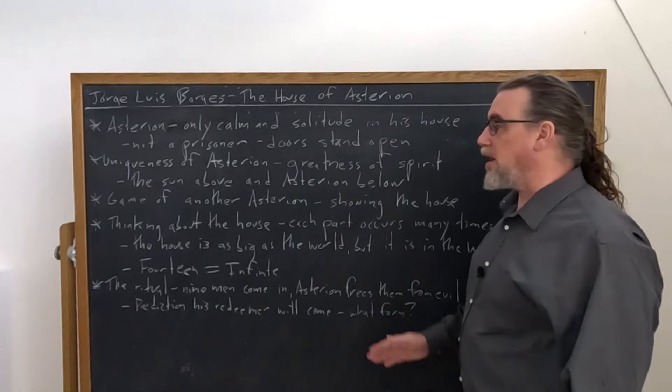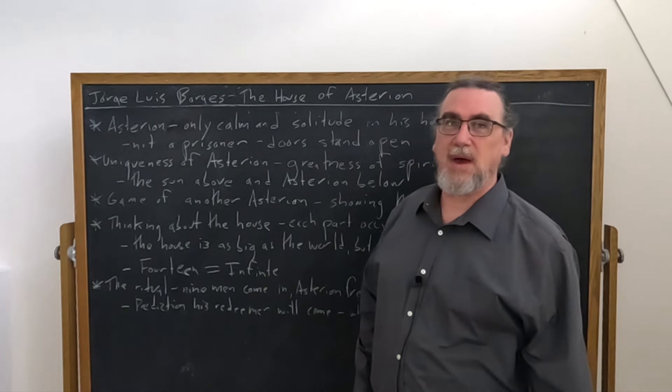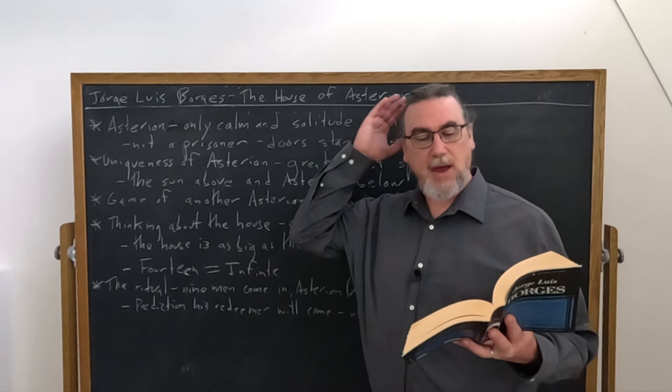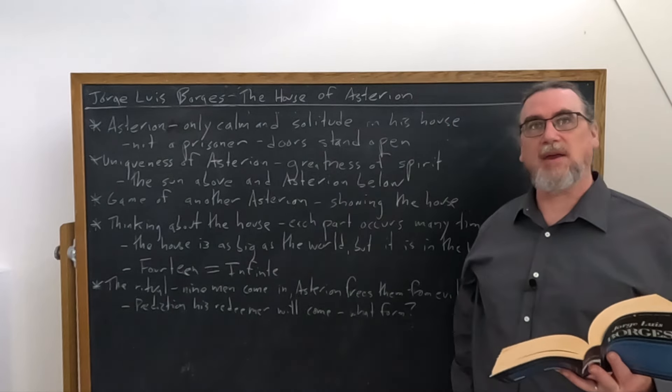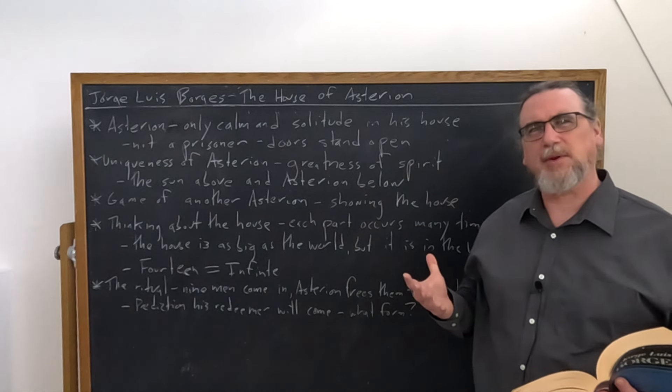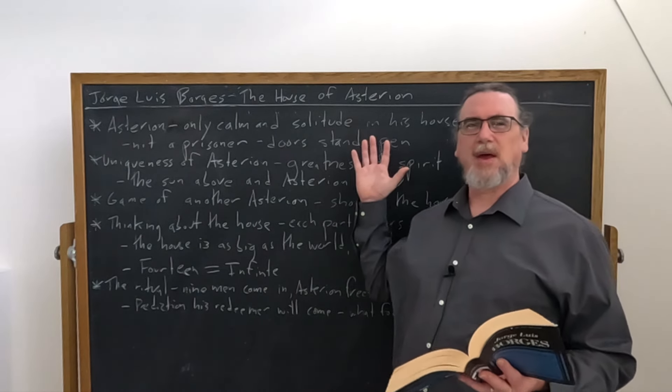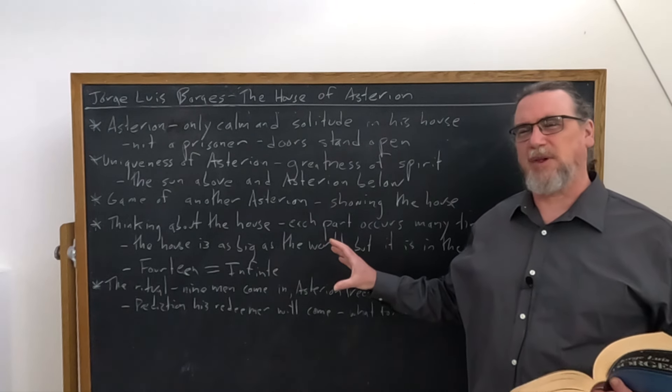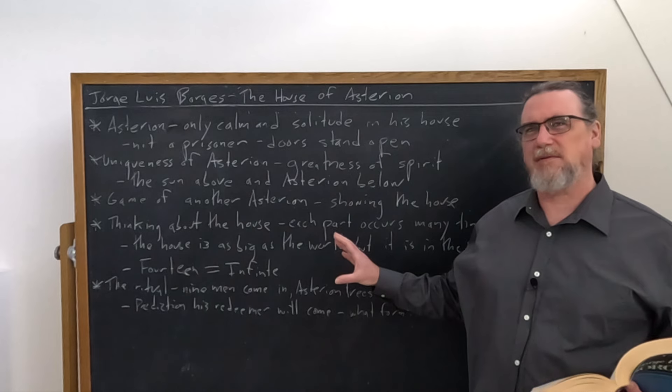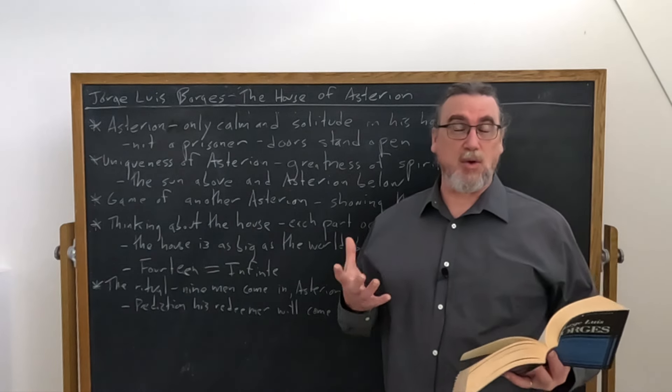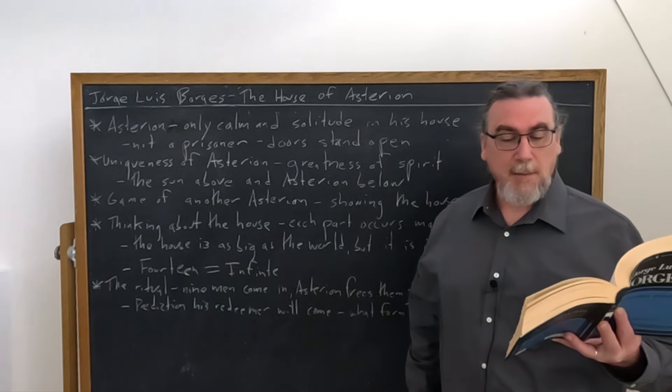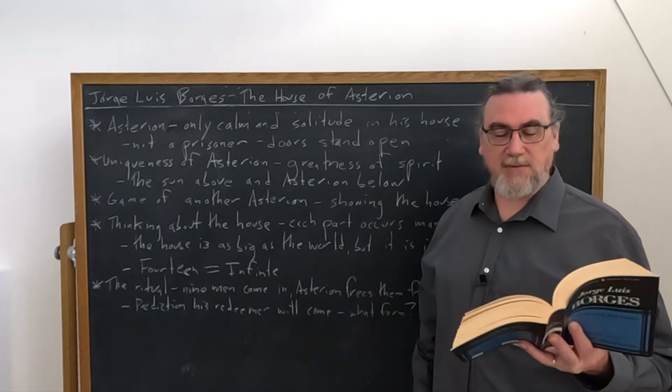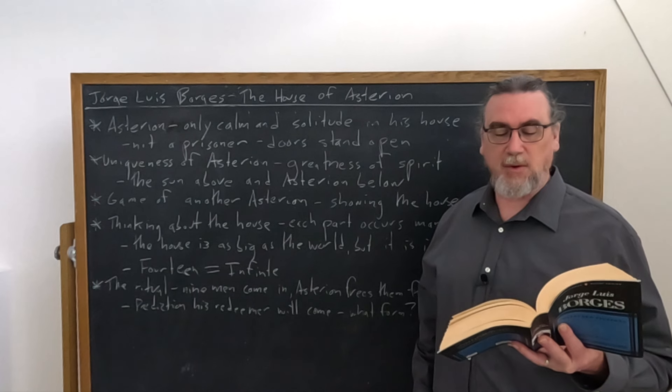It finishes up by talking about a ritual. He mentions every nine years, nine men come into the house so I can free them from all evil. Now we get a different sort of concept here. We've talked about whether he's a prisoner, his magnanimity, this interesting cosmological reflection about 14 and infinite, and now we're talking about good and evil. He's going to purge them, free them from all evil. He runs joyously to find them. The ceremony lasts but a few minutes.